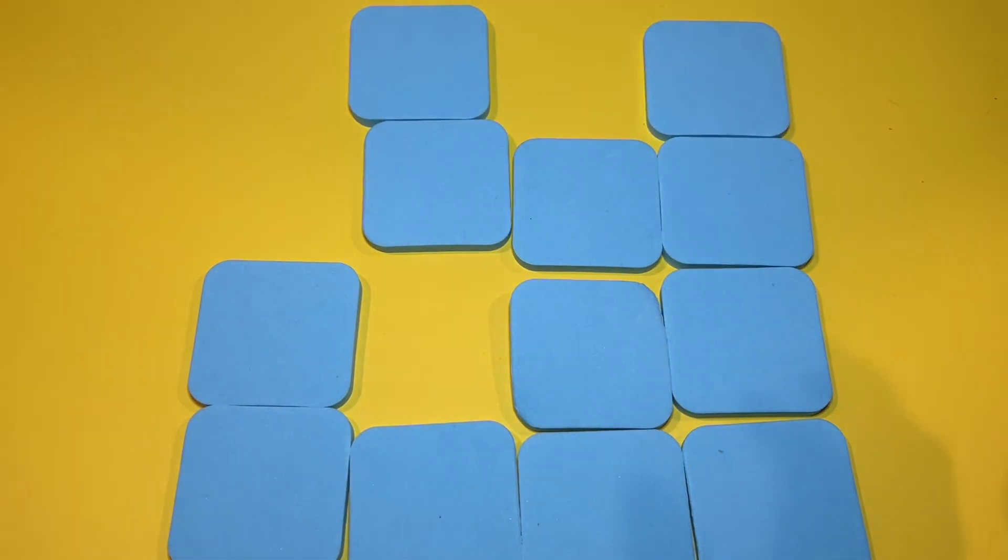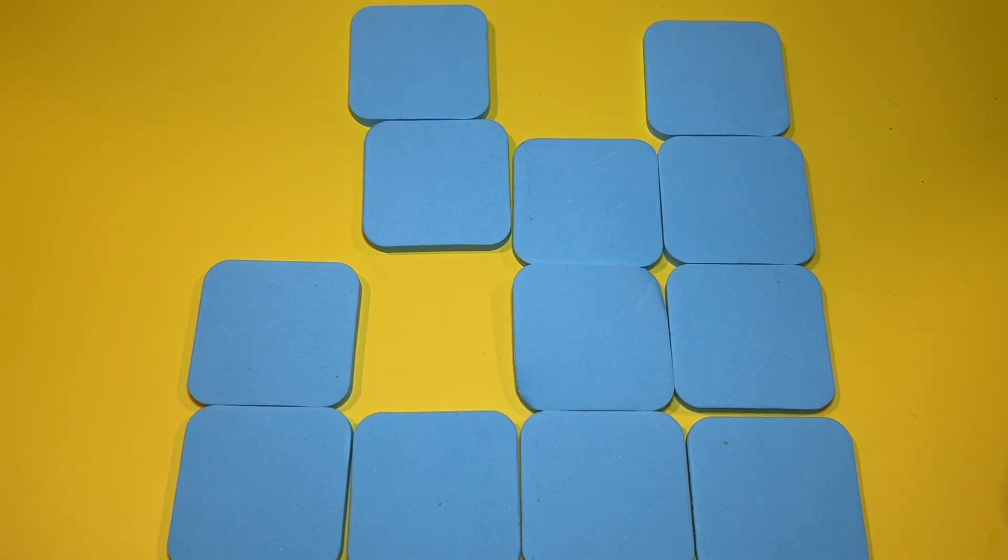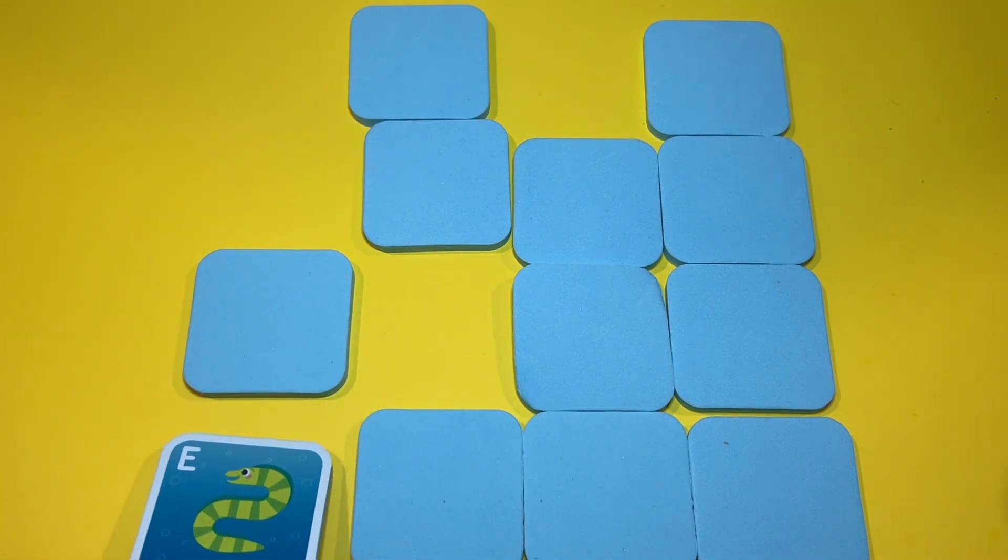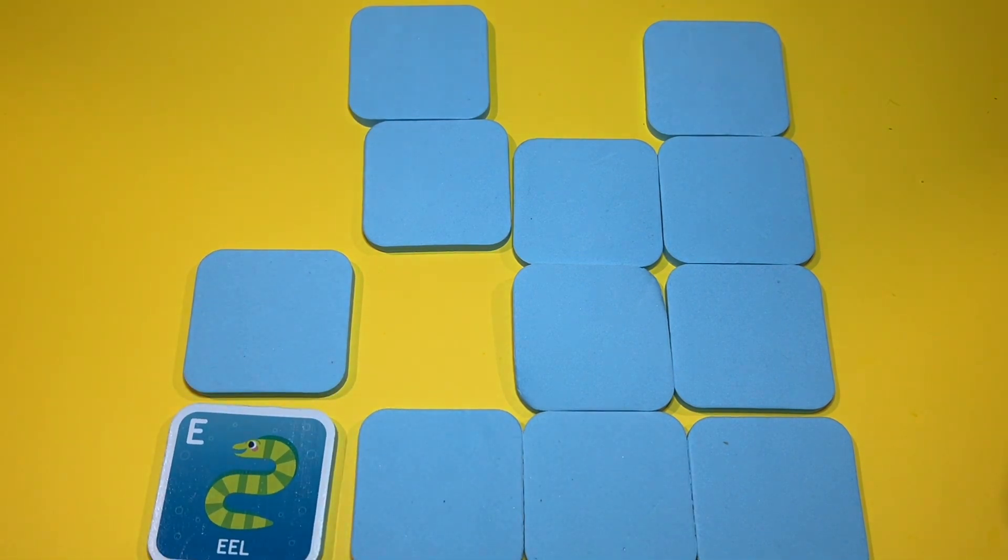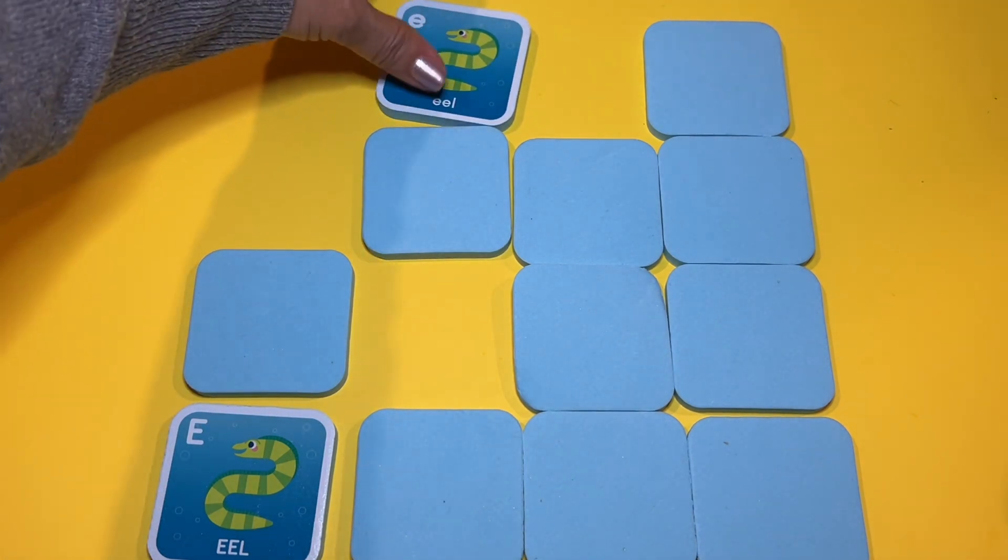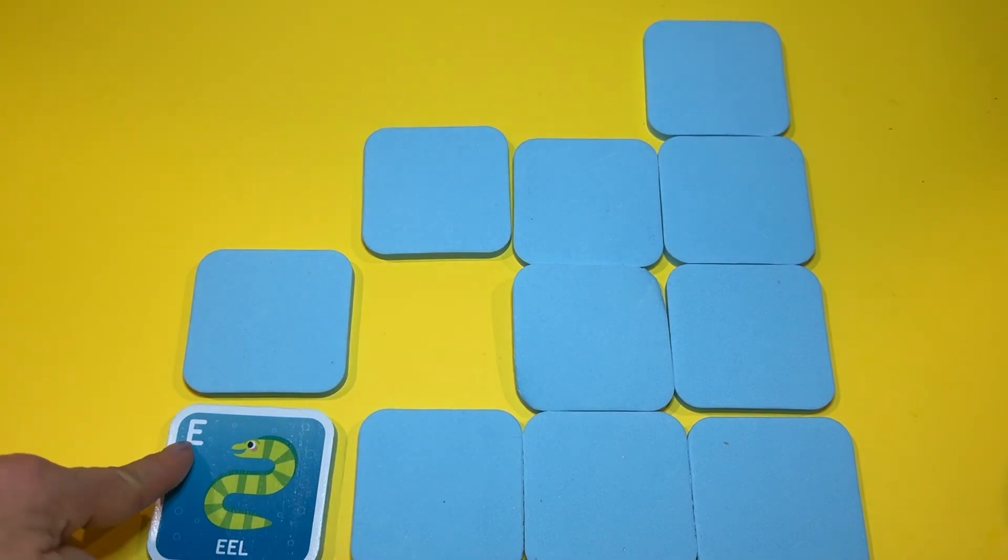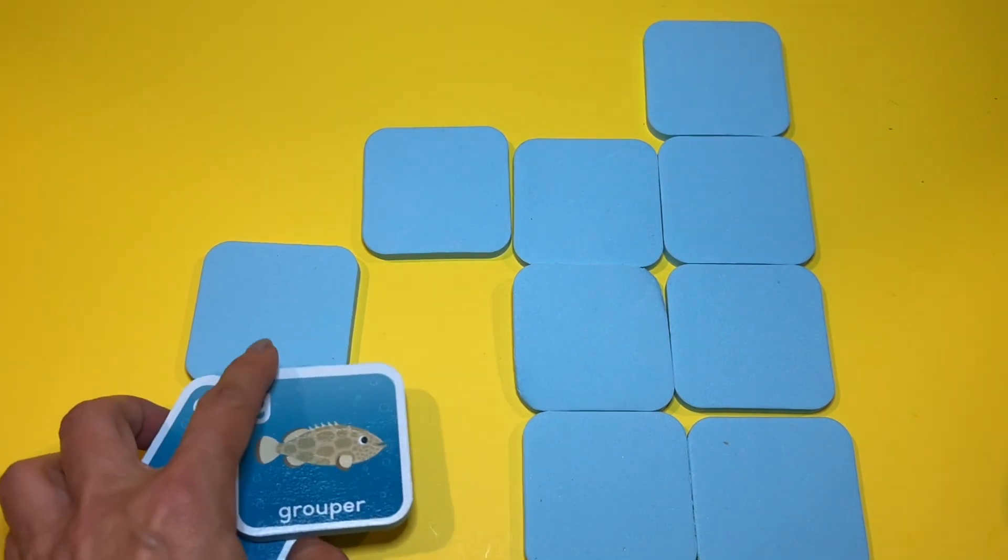Now we have to match all of these and I need your help. Which one should I go to next? How about this one? E, capital E for eel. Oh no. Eel. How about this one? Oh, yay, we got the eel. Small eel, small e, capital E. Yes.